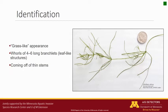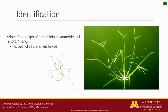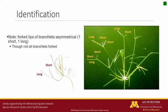Starry stonewort has been described as having a grass-like appearance. It has whorls of 4-6 long branchlets coming off of thin stems. As we take a closer look at the branchlets, note that they have a forked appearance at the tips and that the forks are asymmetrical, with the branchlets subtended by 1-2 shorter structures called bract cells. You may observe some unforked branchlets that do not have bract cells.